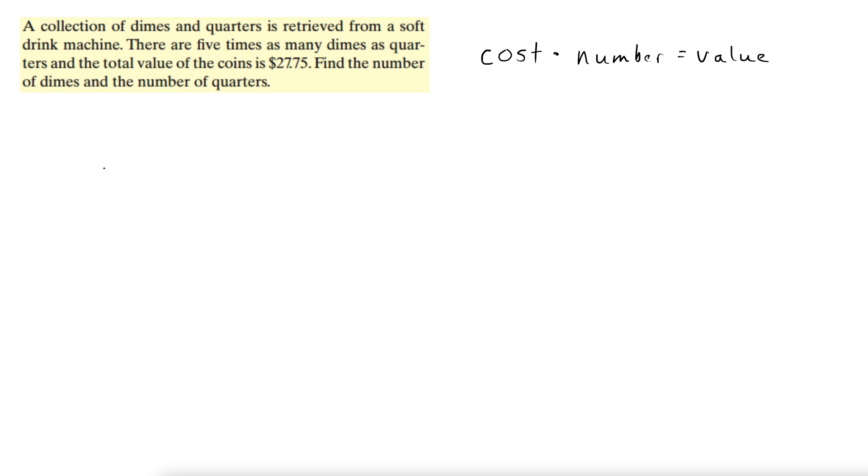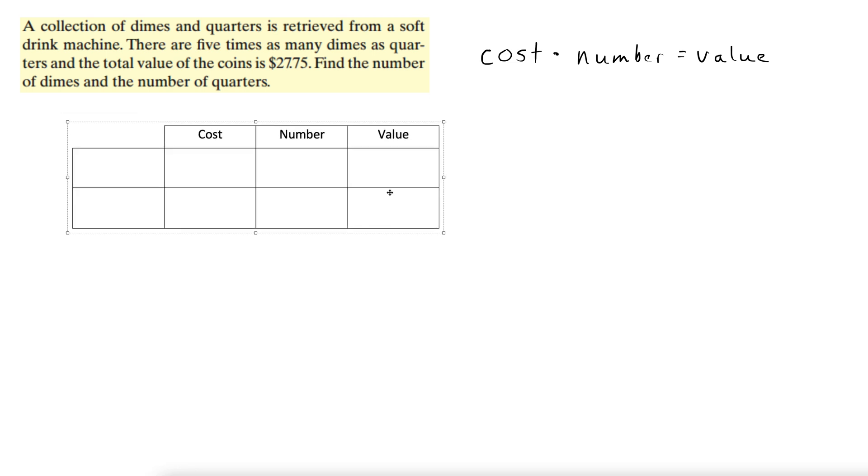Alright, well, there's a table for that, believe it or not. Let's use it. Okay, here we go. Cost times number equals value in a table form. So if you remember this formula, that tells you the top row of the table here.